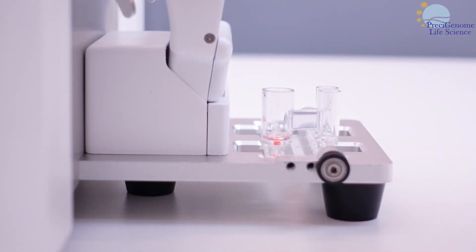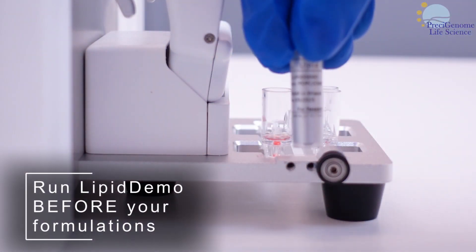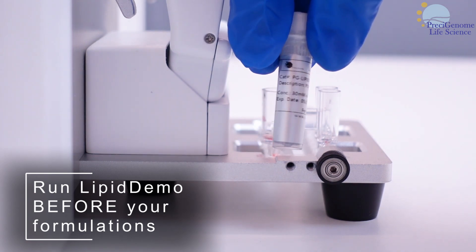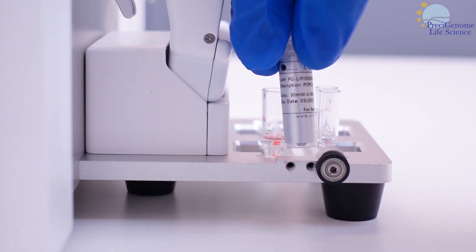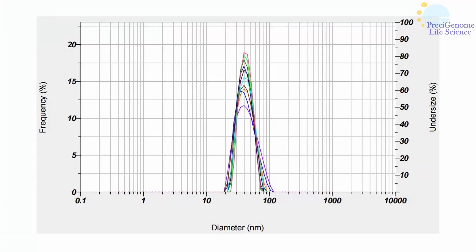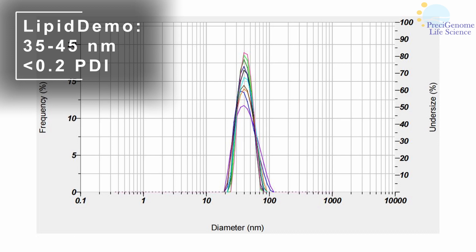Before testing your own formulation, you should test your Flex S with our lipid demo kit. When diluted to 15 mm, the lipid demo at 4 mm and 3 to 1 flow rate ratio yields an average particle size of 35 to 45 nm,